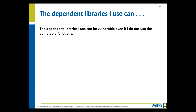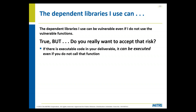The next question: can dependent libraries I use be vulnerable even if I do not use the vulnerable functions? You have a library with two functions — foo and bar. You're using foo; bar has a known vulnerability. You don't call it in your code, but it's still compiled into your library. So the answer is true — the library is vulnerable even though you didn't call the vulnerable function. If there's executable code in your deliverable, it can be executed even if you don't call it. You're increasing your attack surface, so it's better to use libraries with fewer vulnerabilities.